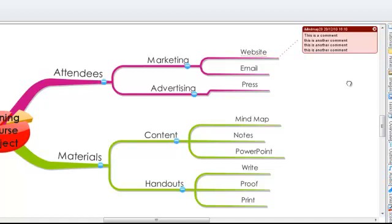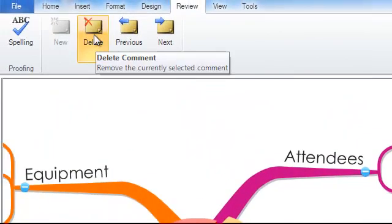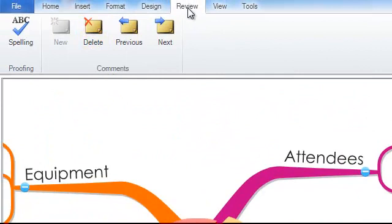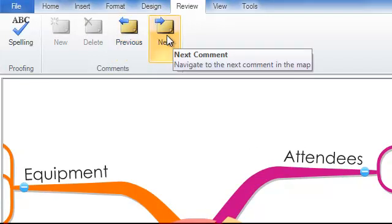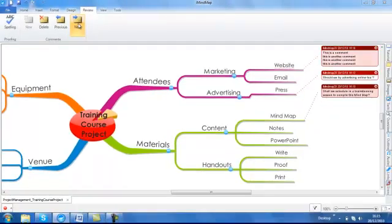To delete a comment, you can simply click on the cross icon within the comment, or click on the comment itself and use the delete icon which is found under the review comments section. If you have a number of comments on your workspace, you can navigate around these easily using the previous or next buttons. This will highlight the next or the previous comment for you to review.